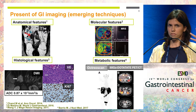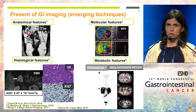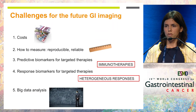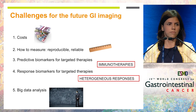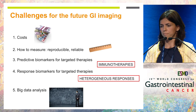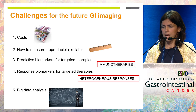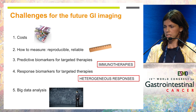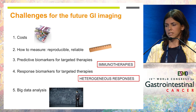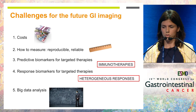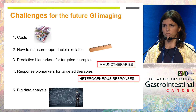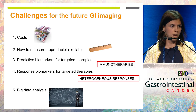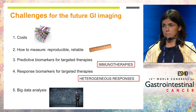Now let's think about the future. Some caveats may arise. Some may think that all these tools are very nice but very expensive — how are we going to afford them? Others may wonder how we are going to measure the changes these images give us. What you need are tools that improve clinical practice: reliable predictive and response biomarkers. Of particular interest is what's going to happen with immunotherapies and in the assessment of heterogeneous response.